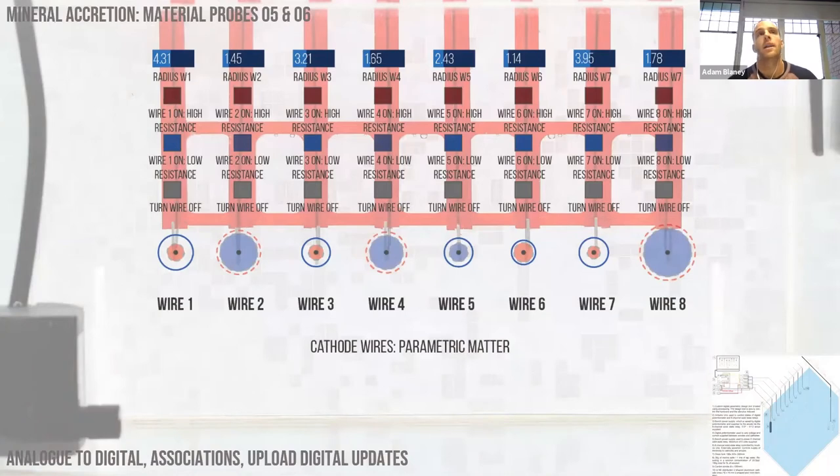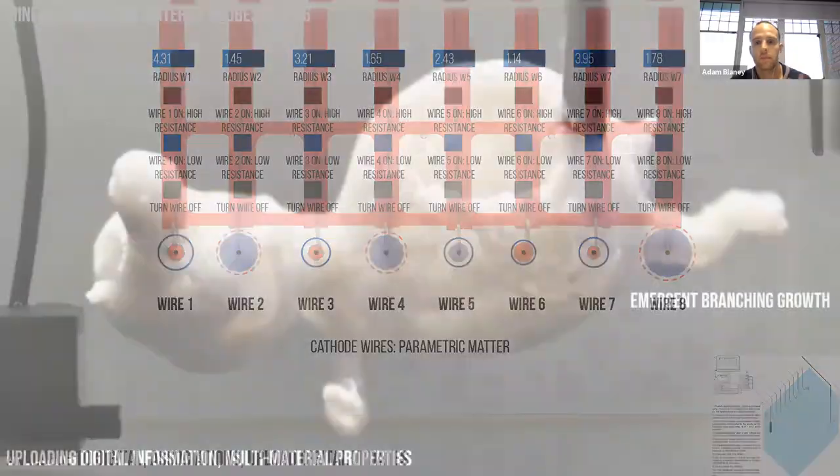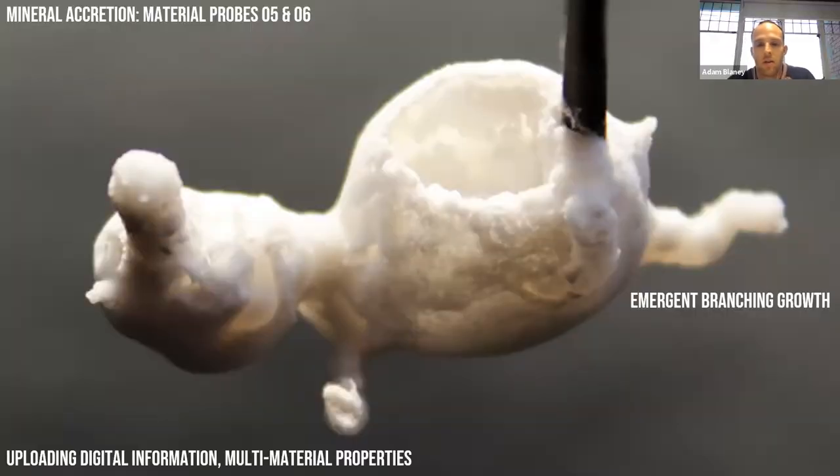Those are all analog approaches to trying to program matter. I wanted to incorporate digital design tools into it, which required creating associations between digital parameters, material properties, and the stimuli parameters. This was based on associative modeling where I'd set volumes or predict growth times based on previous results to grow desired volumes of materials. You can upload digital information into materials.